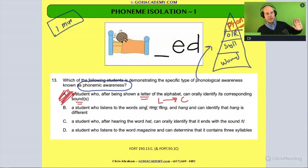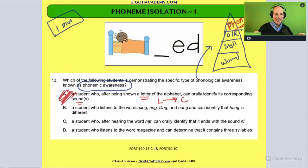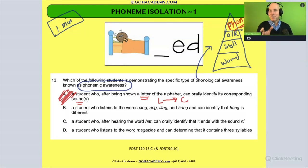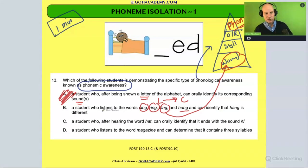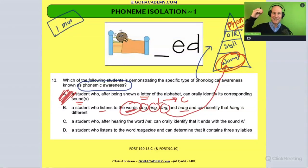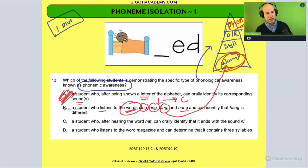Answer B describes a student who listens to the words sing, ring, fling, and hang, and can identify that 'hang' is different. That's phoneme discrimination — being able to tell when something is similar or different. They're recognizing that sing, ring, and fling share the same ending, while hang does not. This is identifying similarities and differences at the word level — basic phonological awareness involving rhyming words, not phonemic awareness — so cross it out.